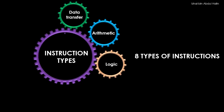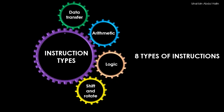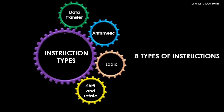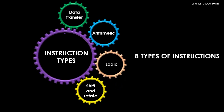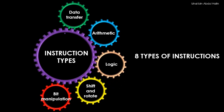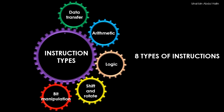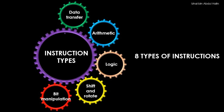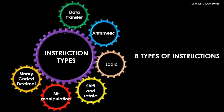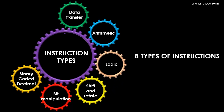Then we have the shift and rotate instruction type. Instructions in this group allow us to rotate or shift data from one bit to the other. We also have the bit manipulation instruction type that allows you to test and change the value of particular bits in an operand. Another group is the binary coded decimal, or BCD, instruction type. Instructions in this group deal with arithmetic operations on eight-bit BCD numbers.